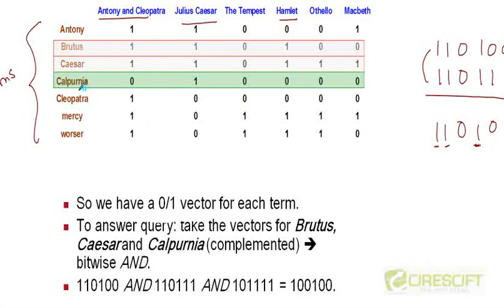To answer the overall query Brutus AND Caesar AND NOT Calpurnia, we can take the complement of the Calpurnia vector and AND it to the result of ANDing Brutus with Caesar. Or, you can think of taking a bitwise AND of these three vectors, Brutus, Caesar and NOT Calpurnia vector. If we do that, if we take the AND of 1 1 0 1 0 0 and 1 1 0 1 1 1. Basically, these were these two vectors. And if we take the complement of the Calpurnia vector which will be 1 0 1 1 1 1